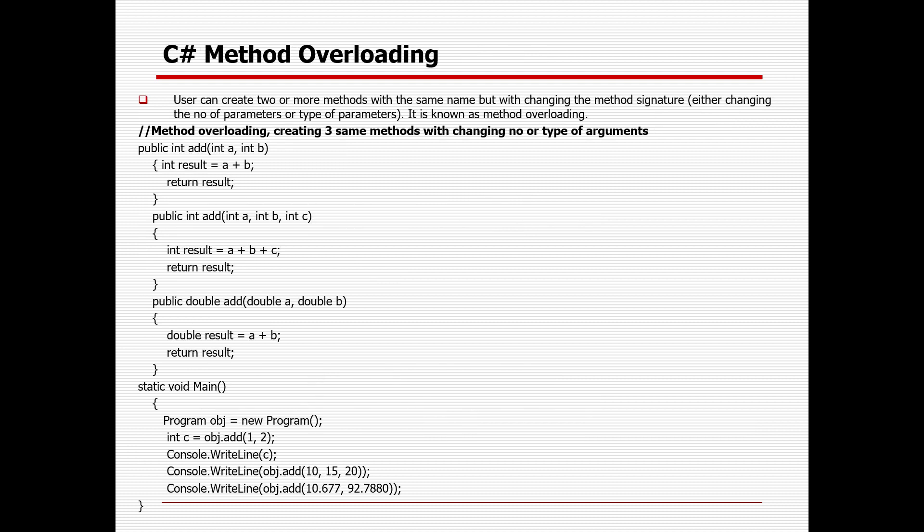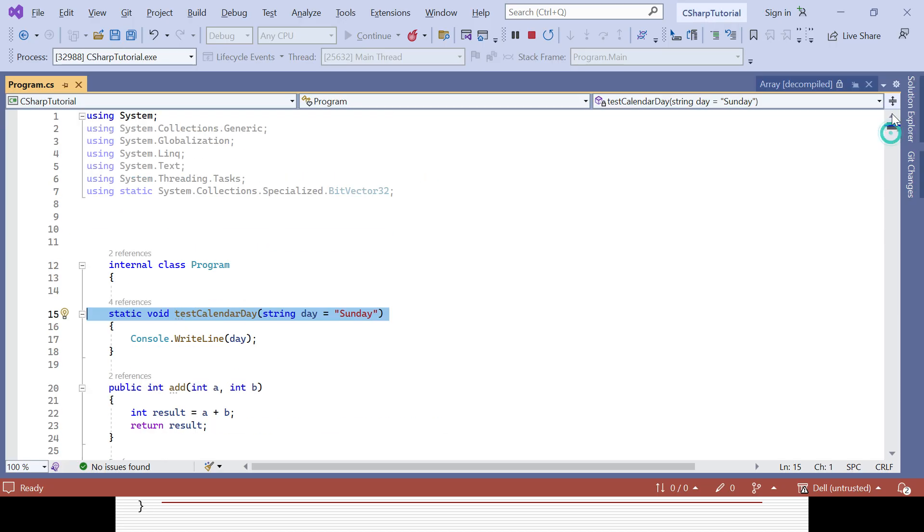The last topic from today's session is method overloading in C#. Method overloading is a concept from OOPs — Object Oriented Programming Structure. Users can create two or more methods with the same name but with a different method signature. Method signature means the argument — the number of arguments (two parameter, three parameter, four parameter) as well as the type of arguments (integer, string, double). Users can create two or more methods with the same name but changing the number or type of parameters. This is known as method overloading.